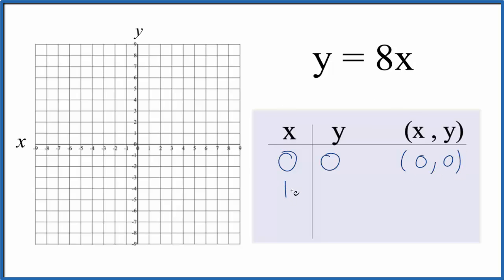Let's put 1 in. If we have 1 for x, 8 times 1, that's 8. So we have 1 comma 8 and let's do negative 1. Negative 1 for x, 8 times negative 1, that's negative 8. So that's our last point.